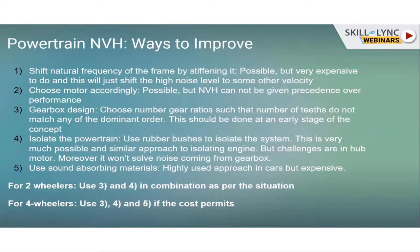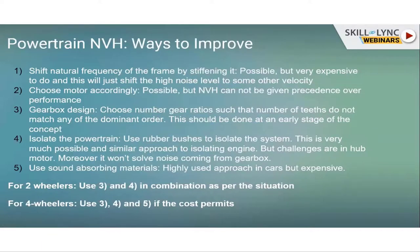We can isolate the powertrain using rubber bushes, similar to how engines are isolated in other vehicles. This is a very good option, but for hub motor vehicles it is not possible, and it won't solve problems coming from the gearbox itself — only from the motor. We can also use sound-absorbing materials to mask the noise, but this is expensive and won't make economic sense for two-wheelers. For two-wheelers, the practical options are gearbox design and powertrain isolation for non-hub motor vehicles. For four-wheelers, sound-absorbing materials are also used.